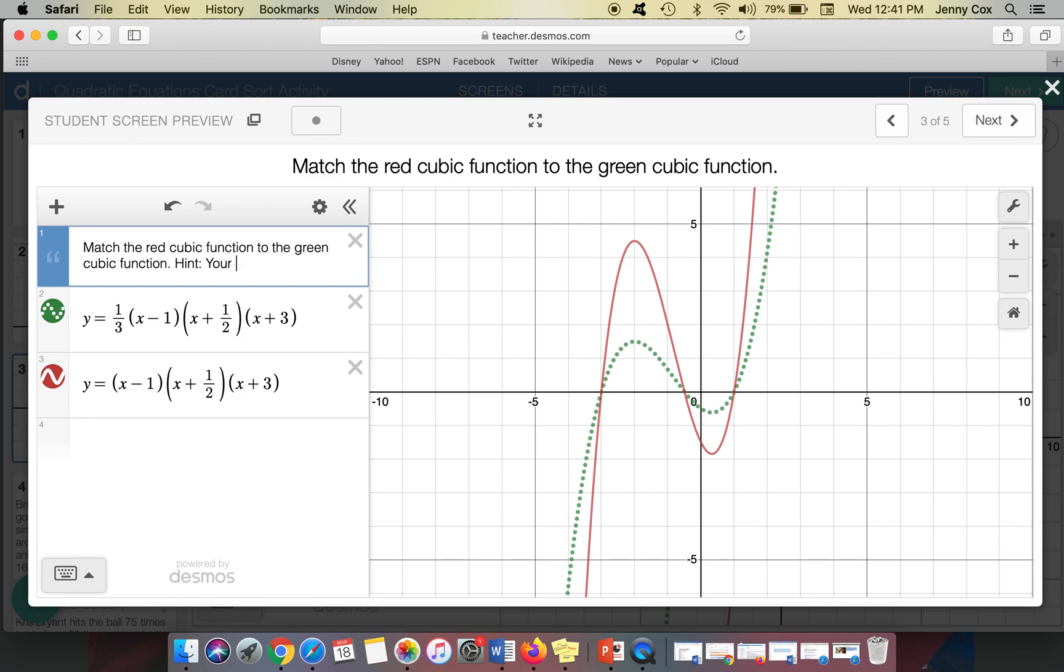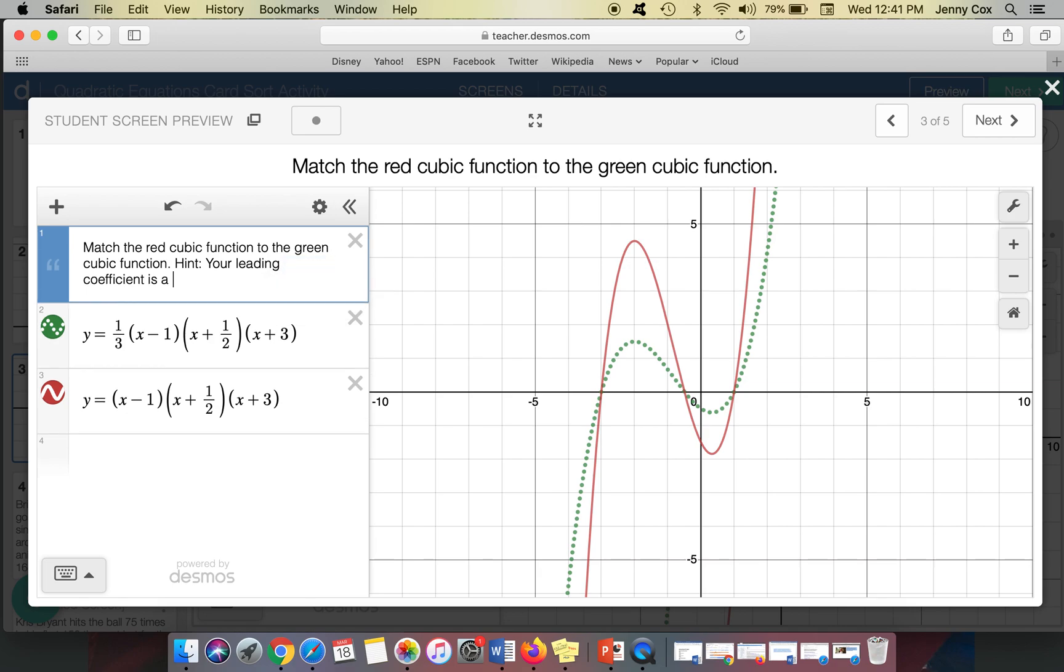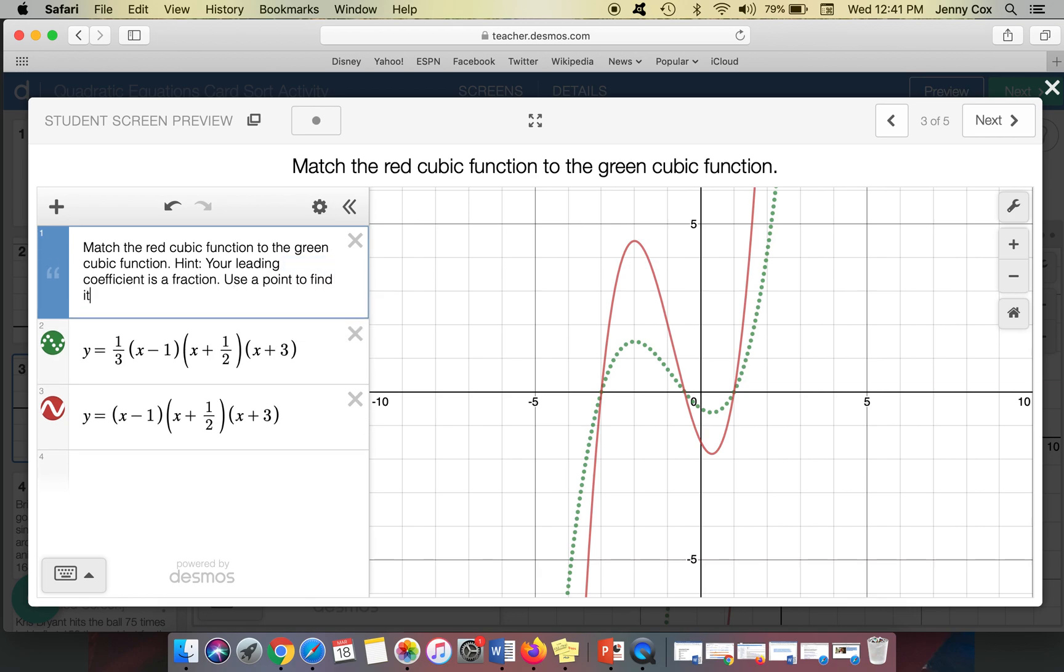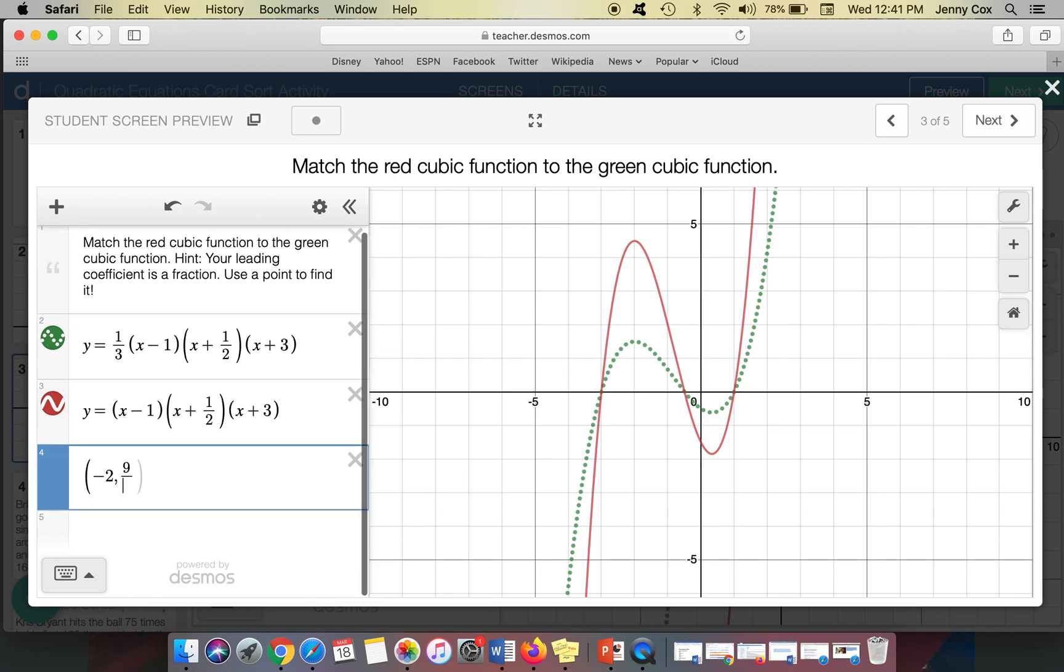So maybe you adjust the note and you say, hint, your leading coefficient is a fraction, use a point to find it. So you could already have a point sketched out for them. So like this point right here is (-2, 4.5). So if you were in that parametric mode, maybe you could draw that point in, or you could write it as 9/2.